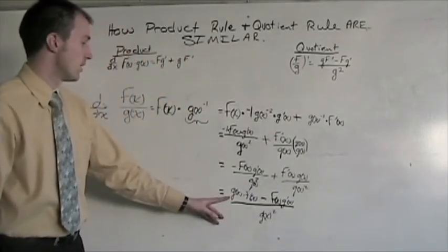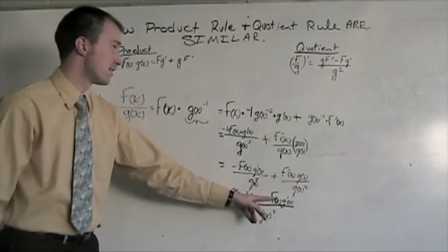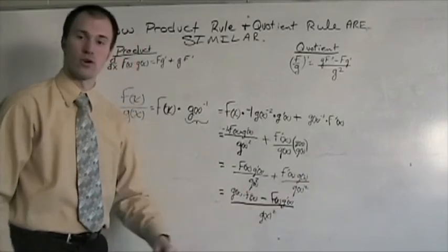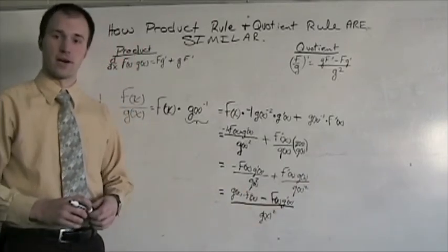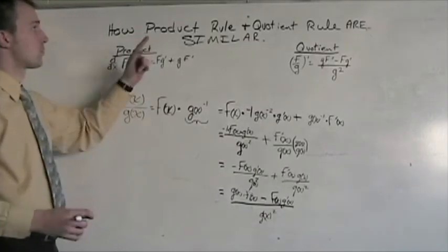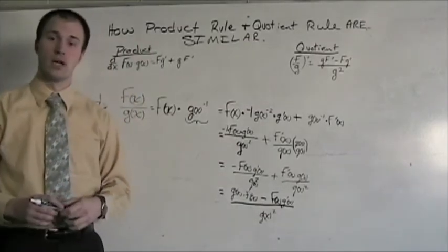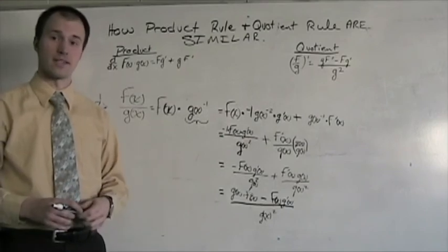And at this point you can see that g f prime minus f g prime over g squared, it's right there. So that's how our product rule and our quotient rule are really not only similar, but exactly the same.